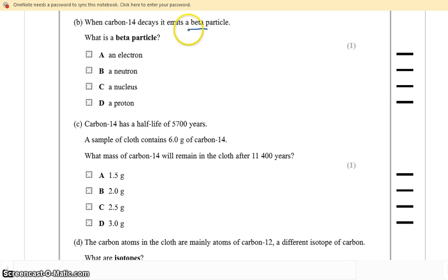Carbon-14 decays and emits a beta particle. A beta particle is simple recall - it's a high energy electron.